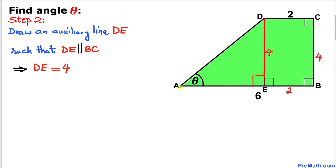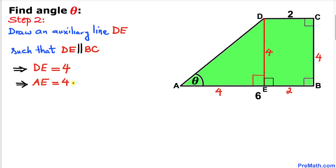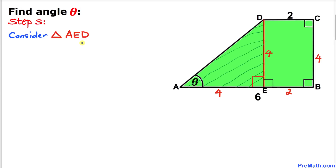We know the whole length AB is 6 units and BE is 2 units, so this remaining length AE is 6 minus 2, which is 4 units. Therefore side length AE turns out to be 4 units. Now let's consider triangle AED.